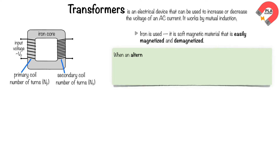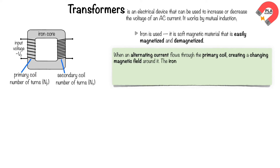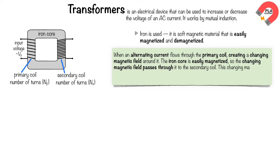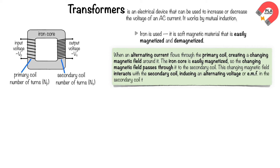When an alternating current flows through the primary coil, creating a changing magnetic field around it, the iron core is easily magnetized, so the changing magnetic field passes through it to the secondary coil. This changing magnetic field interacts with the secondary coil, inducing an alternating voltage, or EMF, in the secondary coil that has the same frequency as the input alternating voltage.